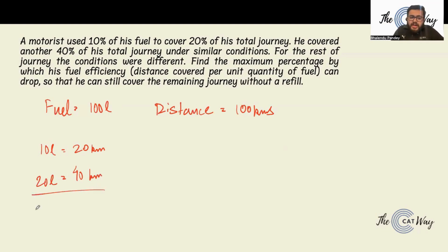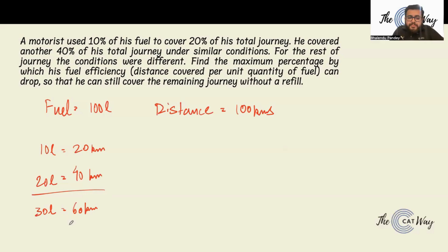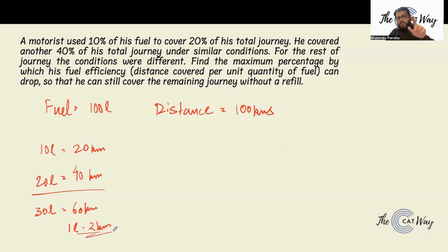He traveled another 40 kilometers under similar conditions, so again he utilized 20 liters. Till now he has utilized 30 liters and covered 60 kilometers. For the rest of the journey the conditions were different. Find the maximum percentage by which his fuel efficiency — that is distance covered per unit quantity of fuel — can drop. The current fuel efficiency is 2 kilometers per liter.